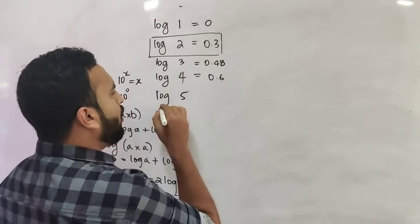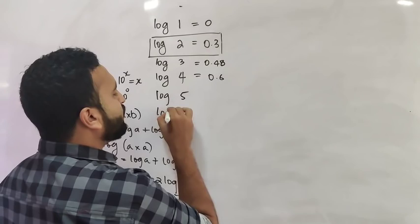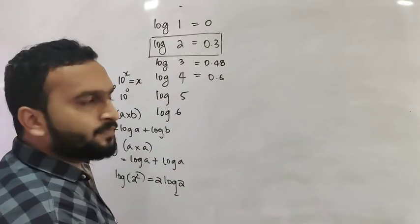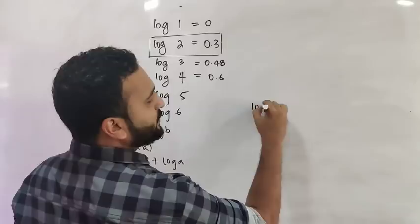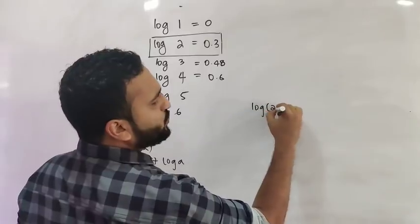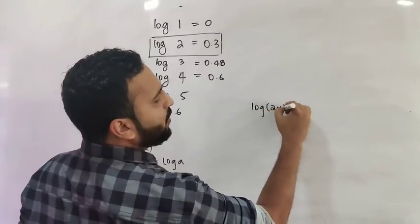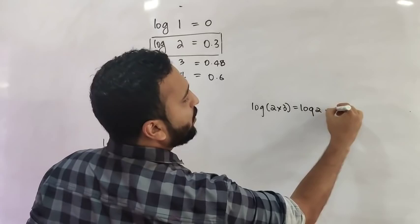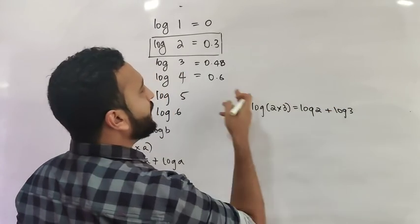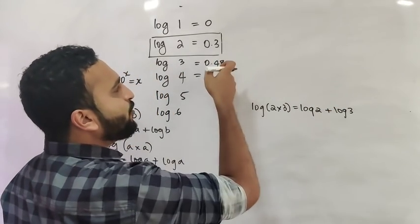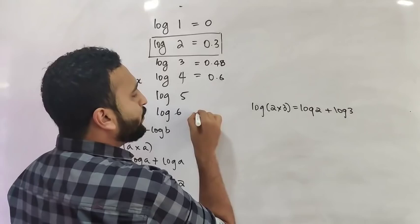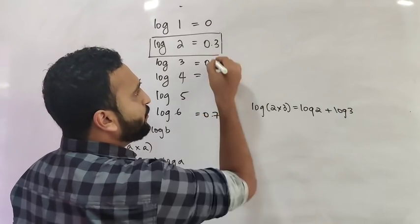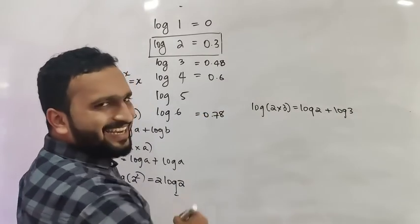Now log of 6 uses the rule log of a into b. Log of 6 is log of 2 into 3, which equals log 2 plus log 3 = 0.3 plus 0.48 = 0.78.